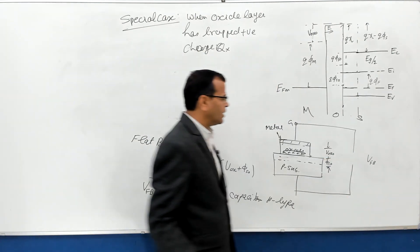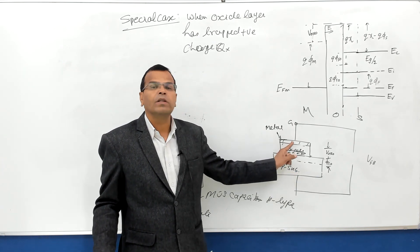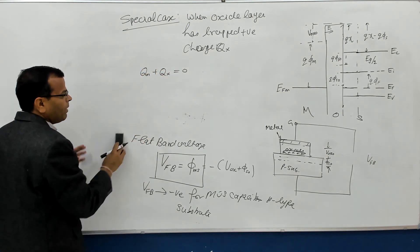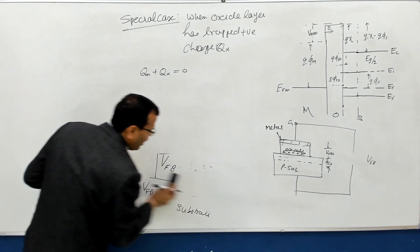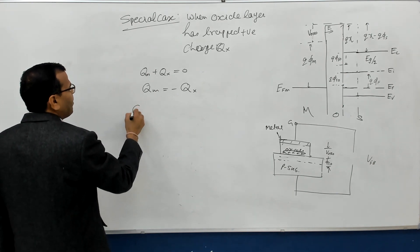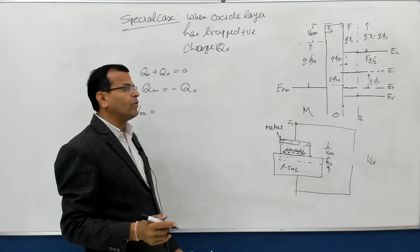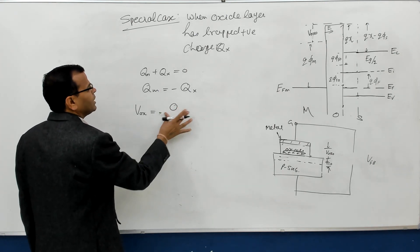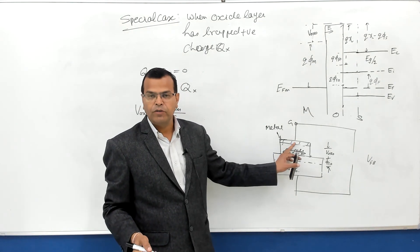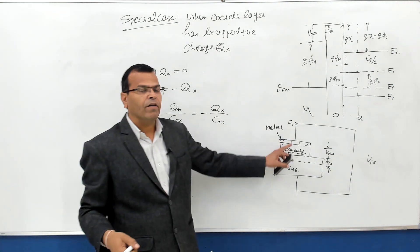When there is no voltage applied and there are trapped charges, the total net charge must be zero. So these positive charges in the oxide will induce negative charges on the metal gate, meaning Q_M equals minus Q_X. The voltage across the oxide will therefore be equal to Q_M divided by C_ox — that is, minus Q_X divided by C_ox.